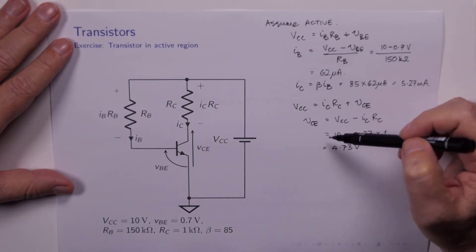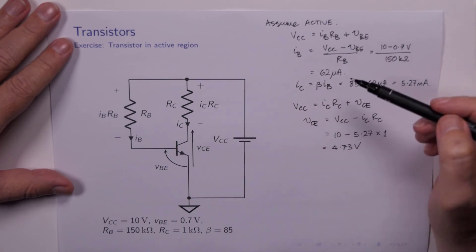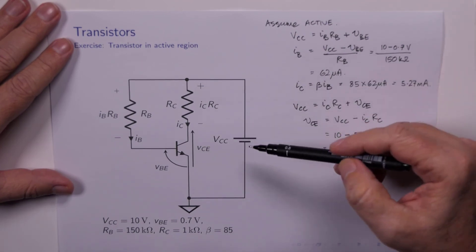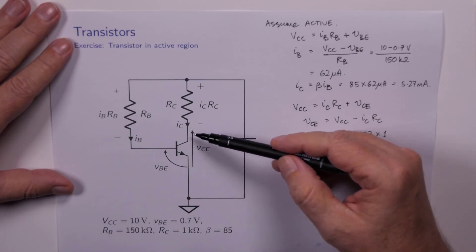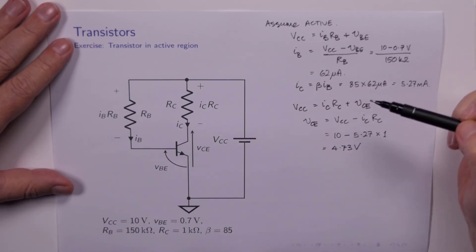The collector emitter voltage, 4.73 volts. That just seems more believable, doesn't it? We've got 10 volts across the entire circuit, 4.73. You know, I'm not seeing any problems there.